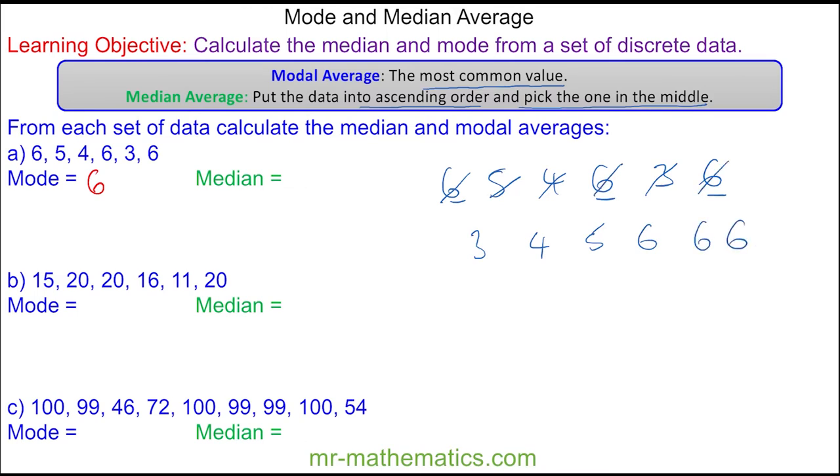To work out the median, I'm going to cross off the smallest and the biggest every time, and this will help me zoom in on the one in the middle, which is between 5 and 6. Halfway between 5 and 6 is 5.5. Okay, let's do question B.